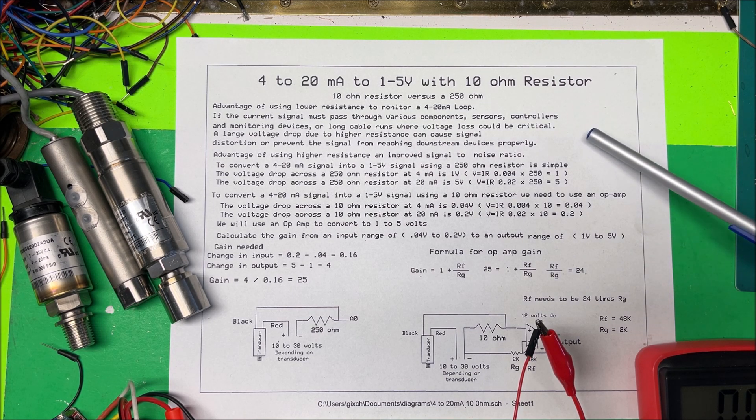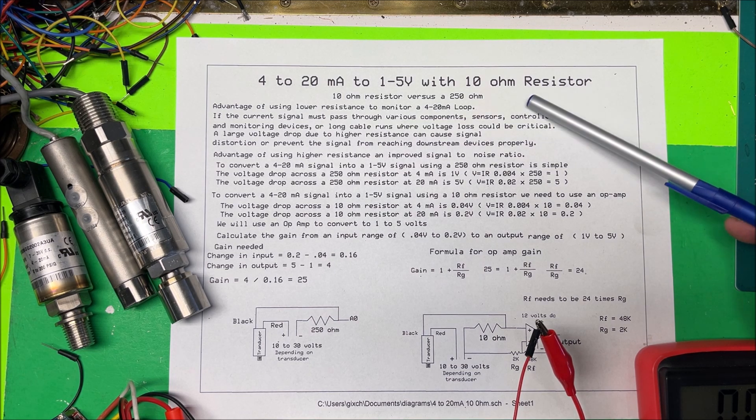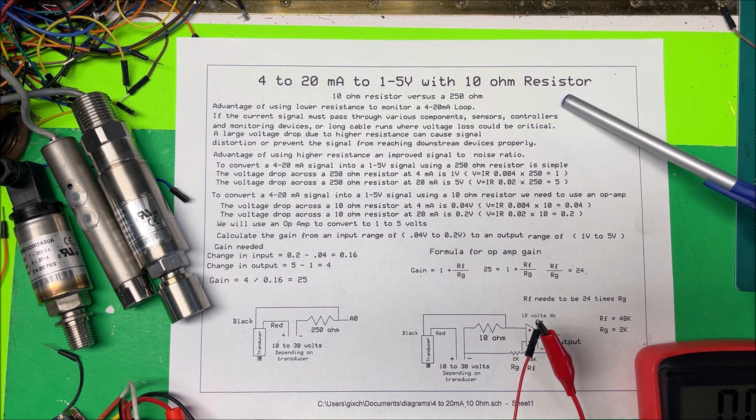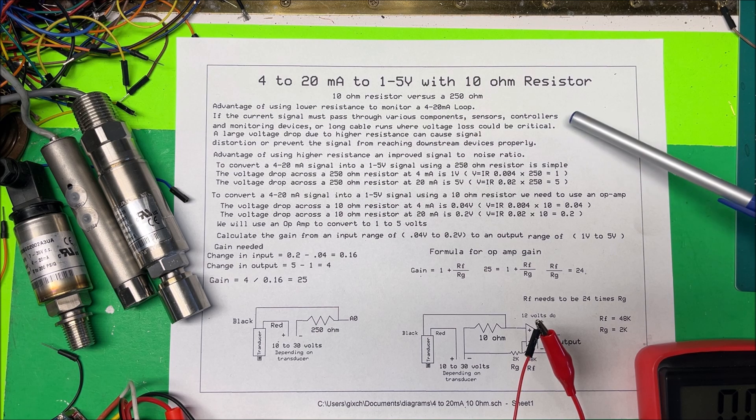Now I have gone 600 meters with a 4 to 20 milliamp loop, but that's kind of pushing the boundary on that. So we're going to try it with the 10 ohm resistor.